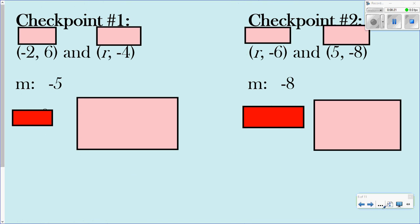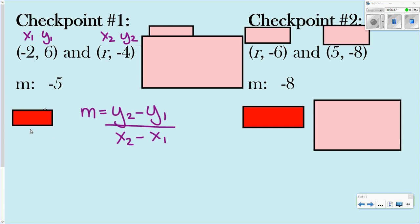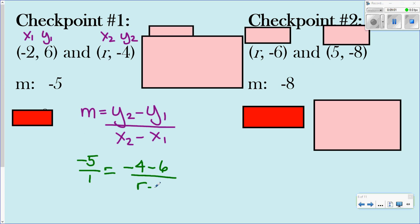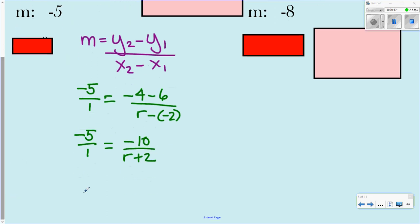More examples — we've got two points, one is missing a coordinate, and they gave you the slope. Label first, then use the formula and plug things in. The slope is negative 5, which I'll write as negative 5 over 1. Then we have negative 4 minus 6 in the numerator, and x2 is r minus negative 2 — put in parentheses to keep signs correct. Simplify: negative 4 minus 6 is negative 10, and r minus negative 2 is r plus 2. Cross multiply: negative 5 times r plus 2 equals negative 10.